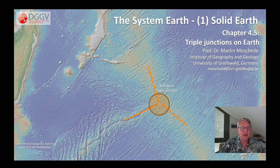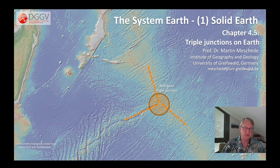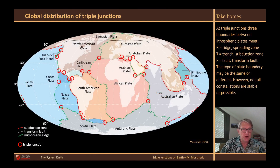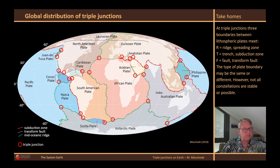Hello everyone. I welcome the viewers of another episode of my video series on the Earth System. In this video, I would like to look at triple junctions again and use a few examples to show how they actually appear on Earth. I already showed this illustration in the previous video. The whole series of triple junctions are shown here, wherever the red circles indicate the meeting point of three plate boundaries. However, these are not all triple junctions that occur on Earth, because even the small plates and microplates always border each other with triple junctions. We will see this also in some of the following examples.